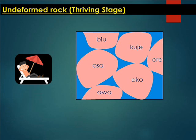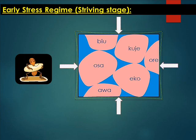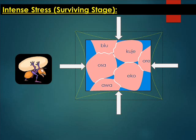Now, suppose something happens and you have some degree of pressure. At this point, this is the early stress regime — you have some early indication of discomfort because of the reducing space, but right now everything is still fine; the grains are still okay. The individuals in that room are still fine with each other. If that continues and things get very intense, that would be the surviving stage — where you have pressures coming from all directions and the volume of space available for these grains has become much less than they can tolerate.